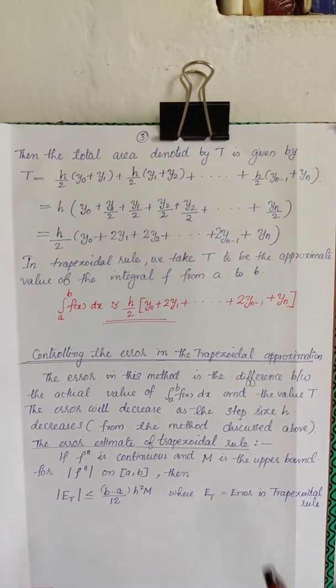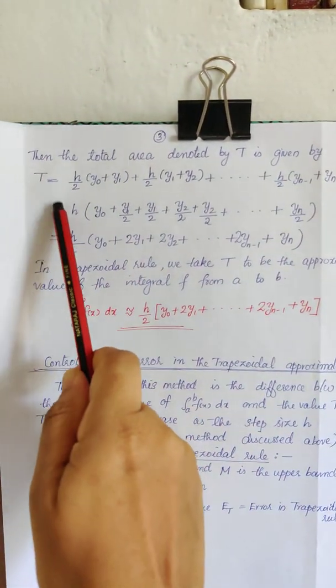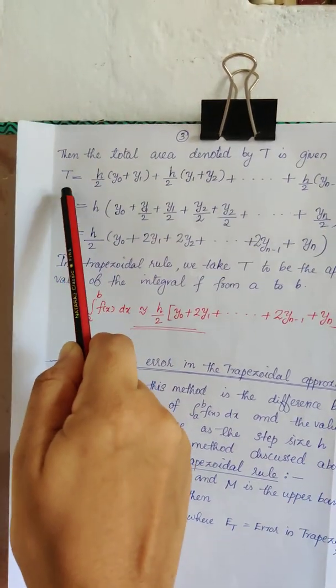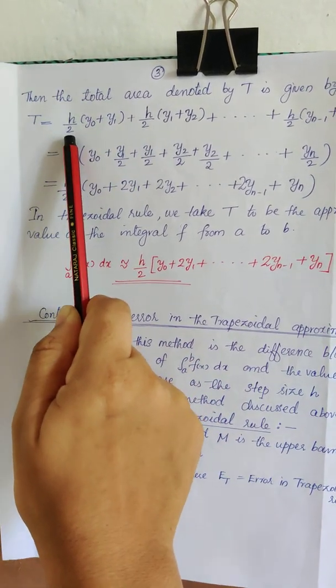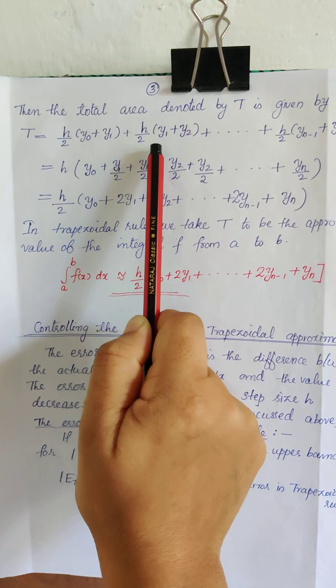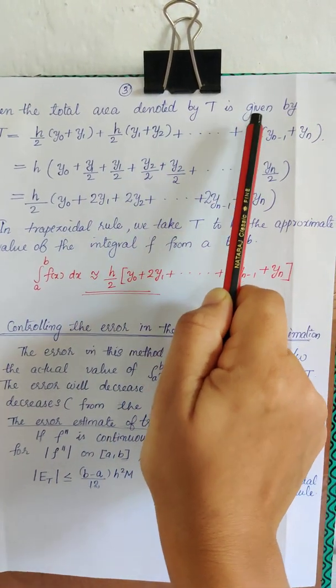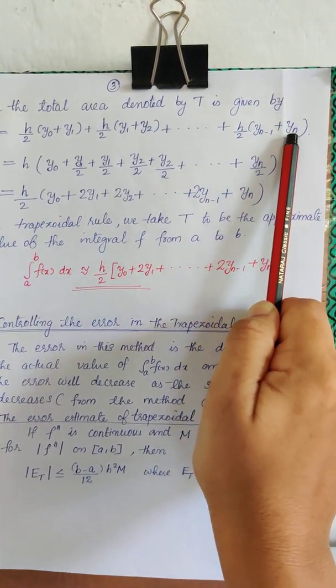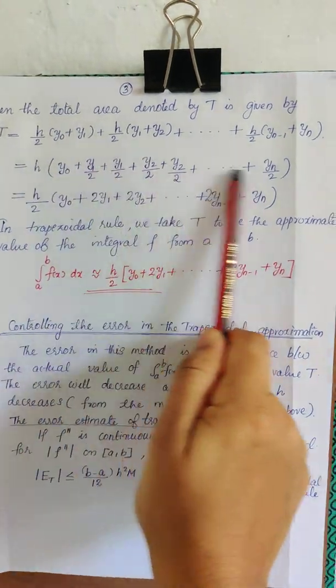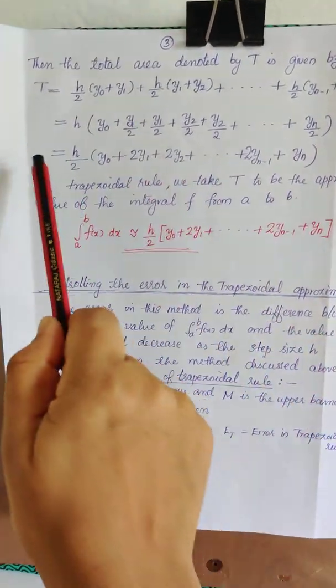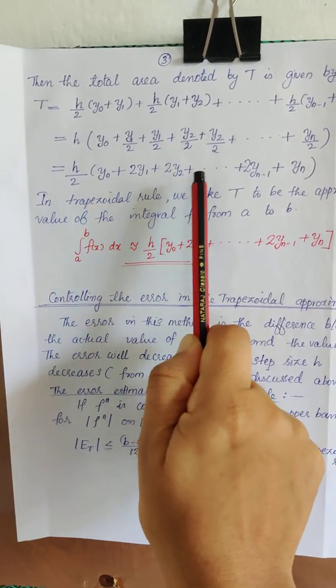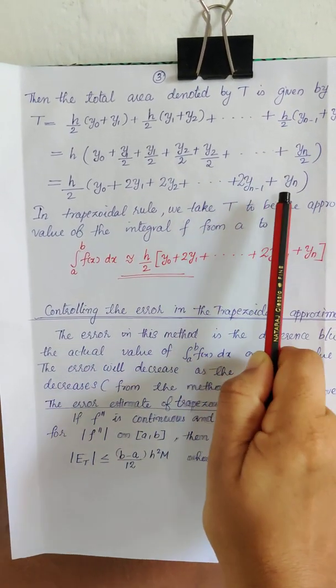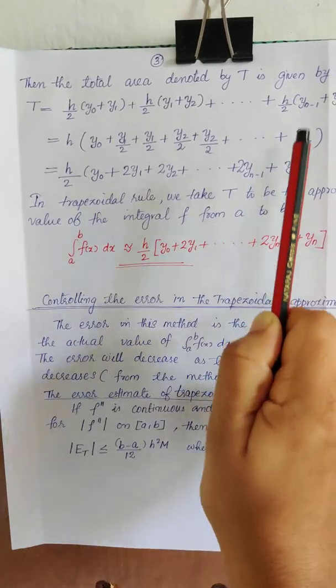What will be the total area? T, we will denote it by T, which is equal to area of the first trapezoid. That is h by 2, y0 plus y1 plus h by 2, y1 plus y2, etc., h by 2, y_n minus 1 plus y_n. And adding these quantities, we are having h by 2, y0 plus 2y1 plus 2y2 plus etc. plus 2y_n minus 1 plus y_n.